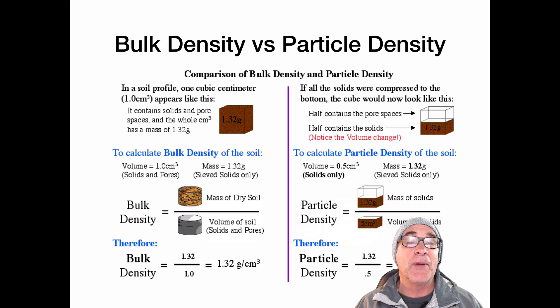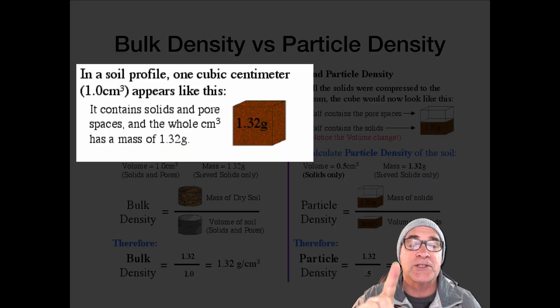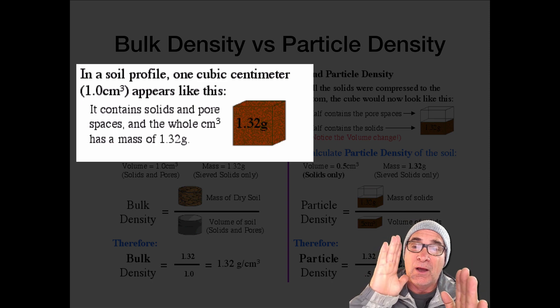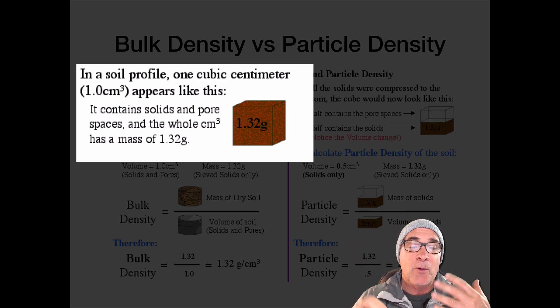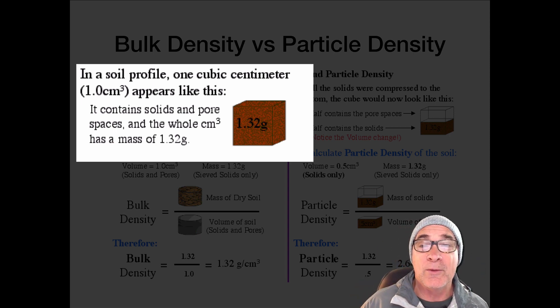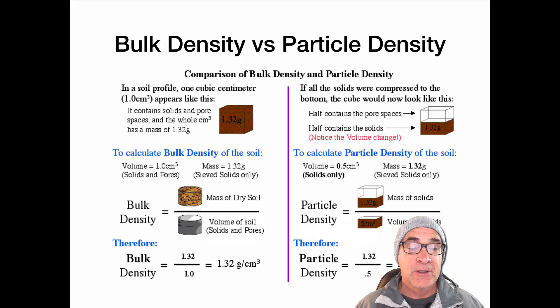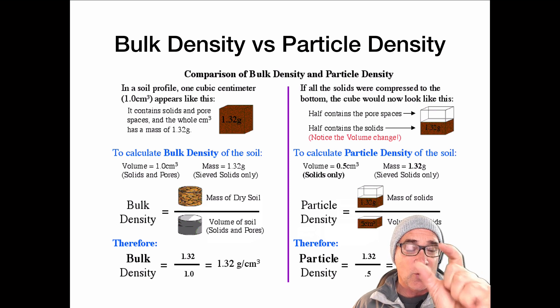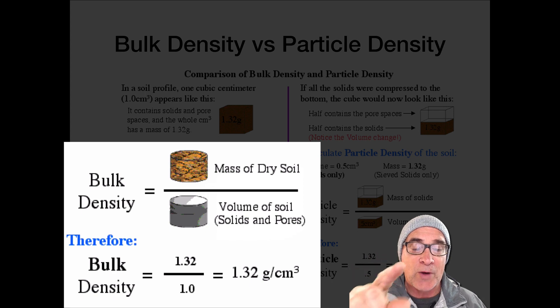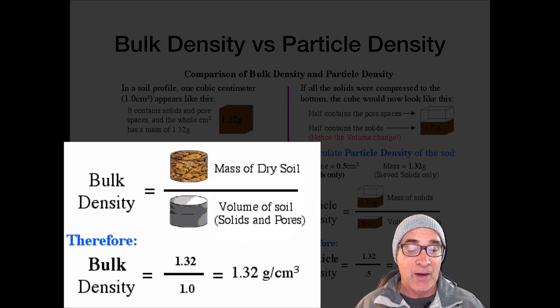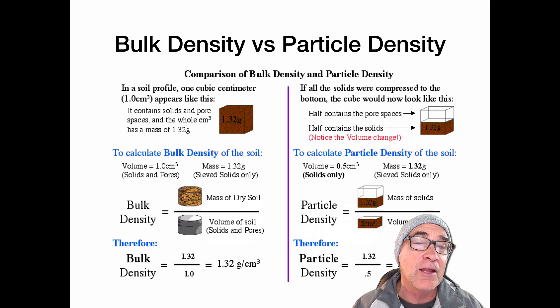Before we get into the porosity part, I just want to compare bulk density versus particle density. When we're looking at bulk density, in the soil profile we're looking at one cubic centimeter of soil - length times width times depth. When we take a look at that, just that one little cube of one by one by one soil, it weighs on average 1.3 grams. So if you take that little cube of soil, dry it, and it weighs 1.3 grams, and we divide it by the volume, that one by one by one centimeter cube. When we divide the 1.32 by one, we get on average 1.32. That's our bulk density. That includes not only the solids but also the pore spaces.